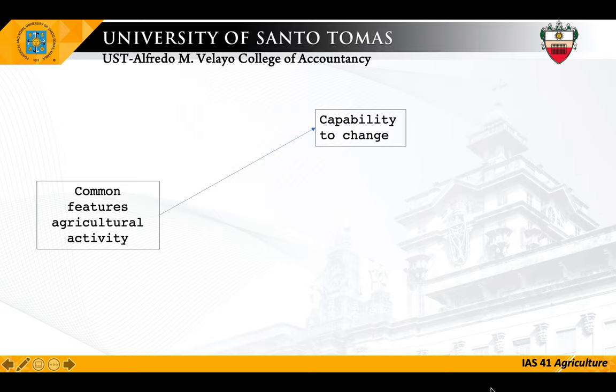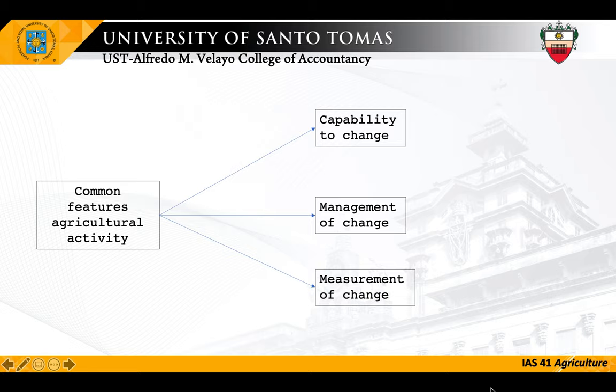There are common features of agricultural activity. Number one is the capability to change — biological assets are capable of biological transformation. Number two is the management of change — the biological transformation of biological assets is being managed. Number three is the measurement of change. That is why ocean fishing is different from fish farming. Fish farming is considered an agricultural activity whereas ocean fishing is not.